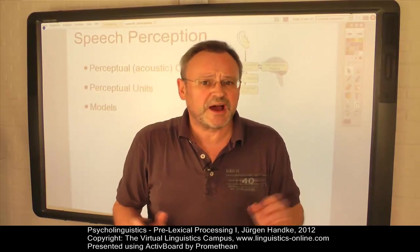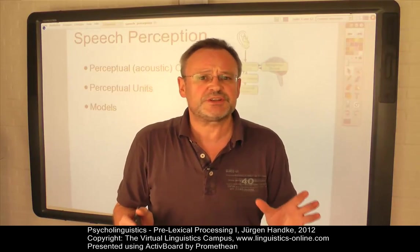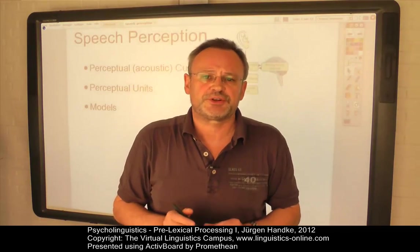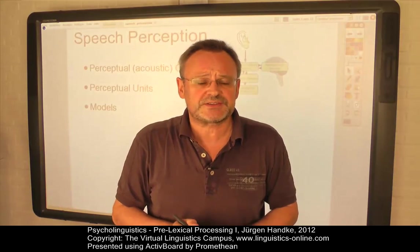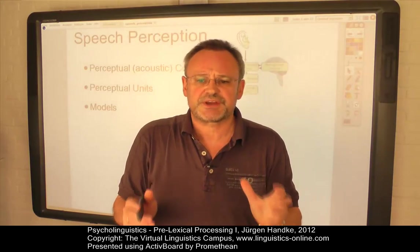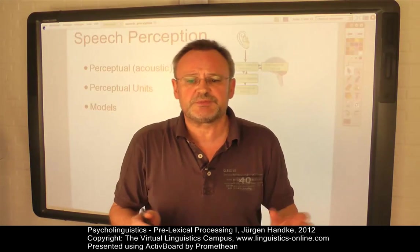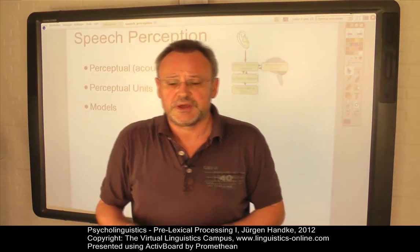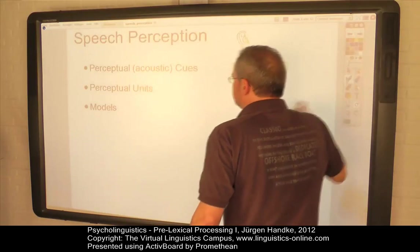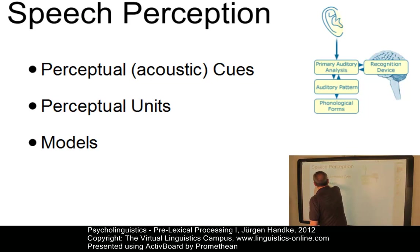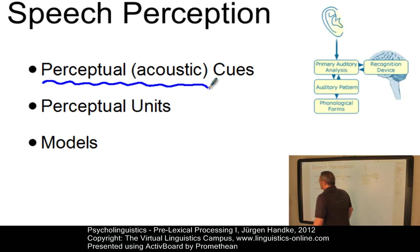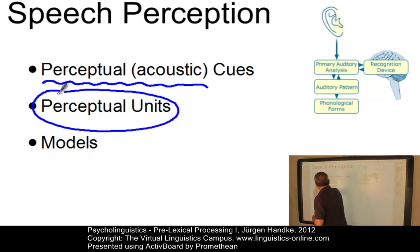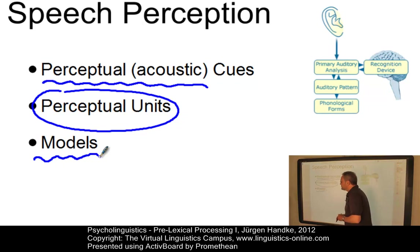Speech perception begins with a highly complex, continuously varying acoustic signal and ends with a representation of the phonological features and segments encoded in that signal. This e-lecture discusses the main principles according to which the acoustic input is converted into such a code. In particular, we will discuss three central questions: Does the input signal contain specific perceptual or acoustic cues? What are the perceptual or linguistic units of speech perception, and how can we model the process of speech perception?